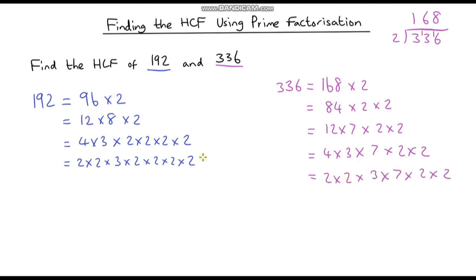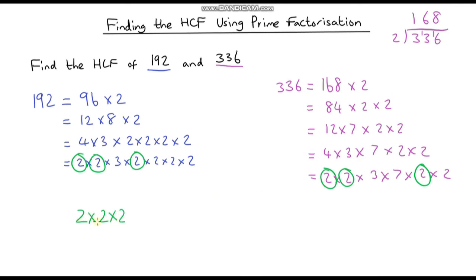Now we identify which prime factors 192 and 336 have in common. They share a 2, another 2, another 2, and another 2 — so both numbers have a 2 times 2 times 2 times 2 in common. They also both have a 3 in common.